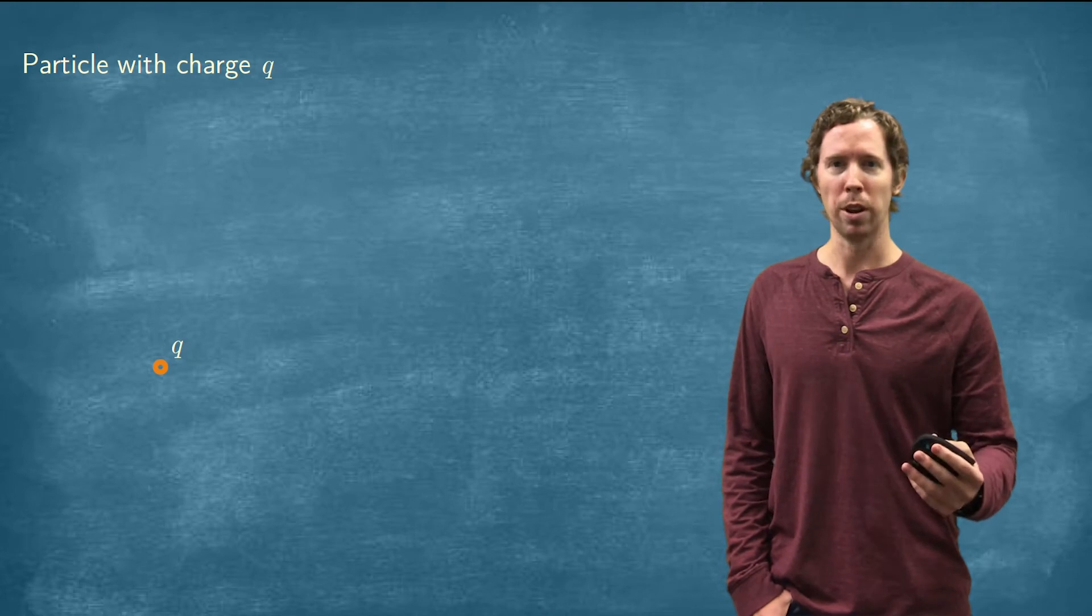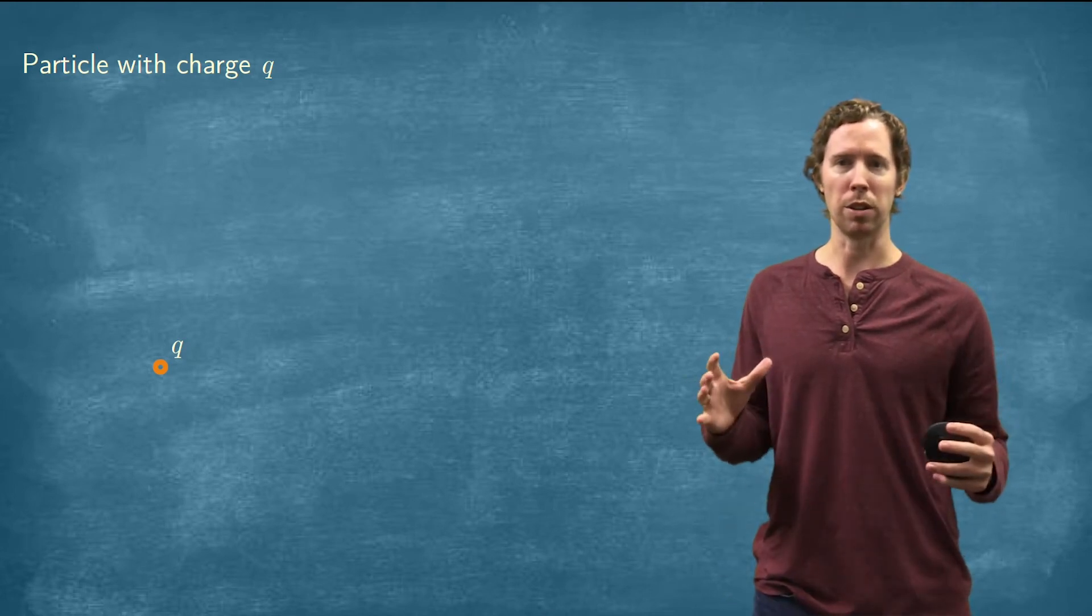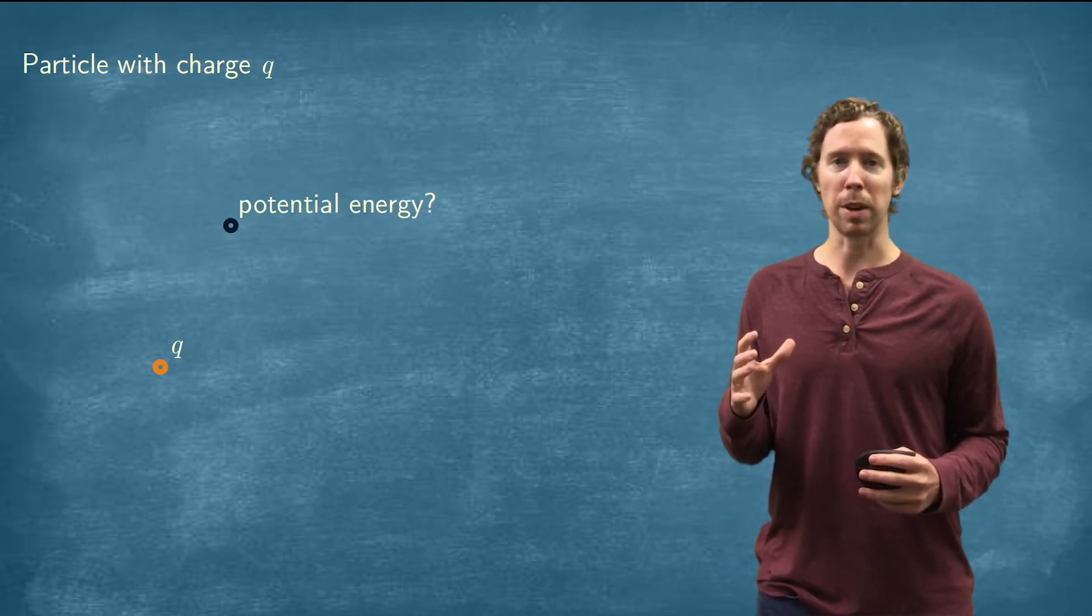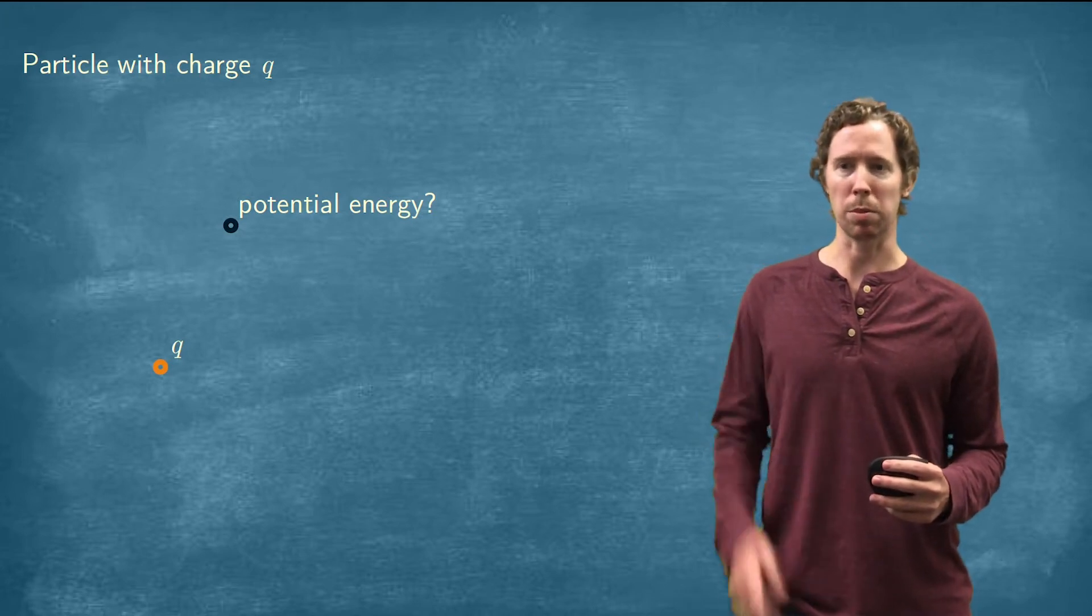Let's say we've got a particle with charge Q. This point is putting out an electric field, and at every point in space we can calculate potential energy and electric potential there.